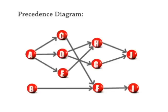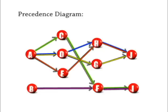We can use this diagram to identify our paths. For instance, we have path A, C, F, and I. We have path A, D, H, and J. Path A, D, G, and J. And path A, E, H, and J. And B, F, and I. So we have five paths through this project.